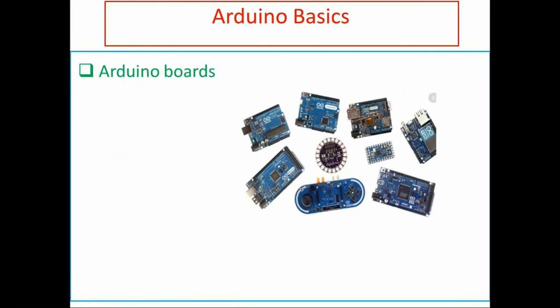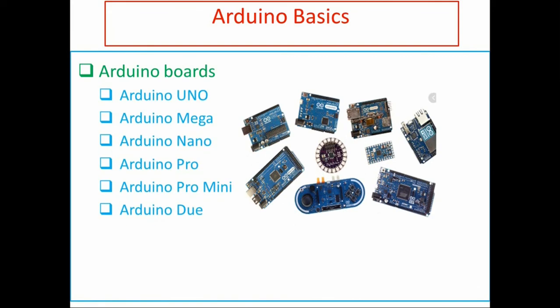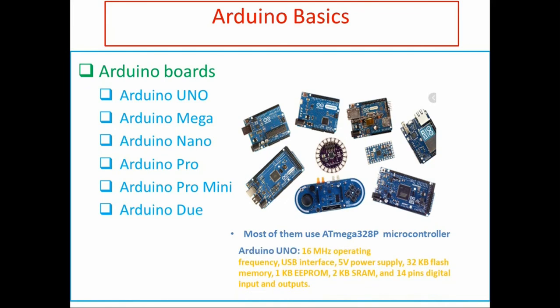There are many boards available as an Arduino platform such as Arduino Uno, Arduino Mega, Arduino Nano, Arduino Pro, Arduino Pro Mini, Arduino Due. All of these boards have one thing in common, that is microcontroller family. They use the same AVR microcontroller family. Most of them use ATmega328P microcontroller, but some use different microcontrollers such as Arduino Leonardo uses ATmega32U4 microcontroller with slightly different capabilities and features than the Arduino Uno.